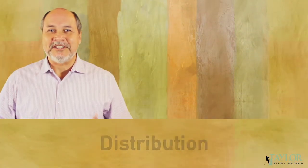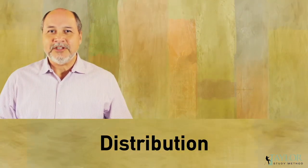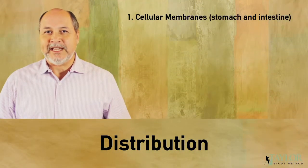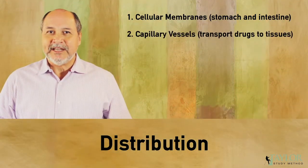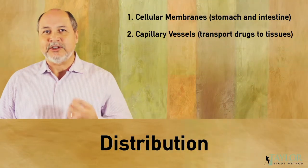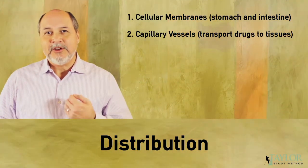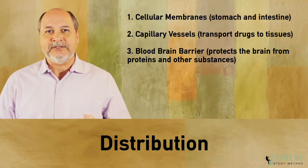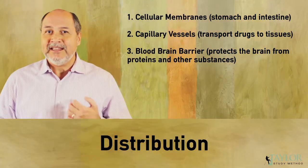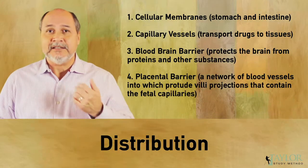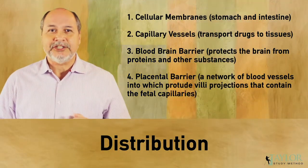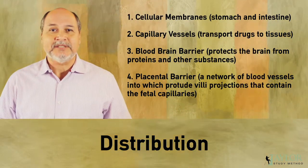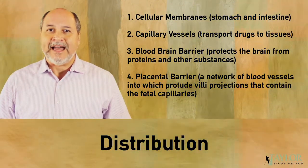Distribution occurs through cellular membranes, typically located in the gut. The capillary vessels transport the drugs to the tissue. You also have the blood-brain barrier to protect the brain from proteins and toxins, and then finally the placental barrier, which protects the developing fetus from toxins and other active agents.